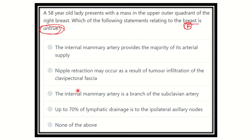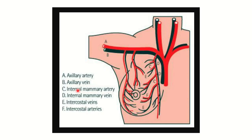We have to find the option which is not compatible with the normal anatomy of the breast. Here we can see a diagram of the female breast and its arterial supply. This artery arising from the subclavian artery is the internal mammary artery, and we can see that in the medial side, the internal mammary artery supplies almost half of the breast.